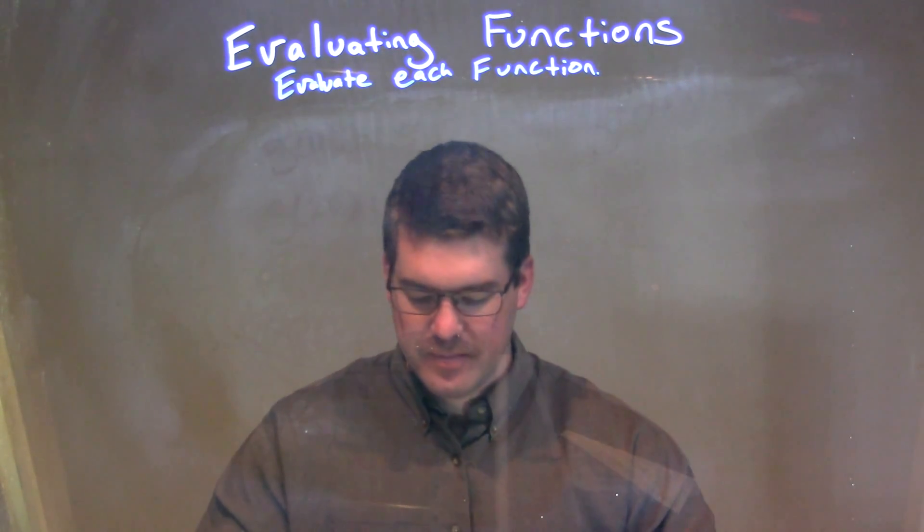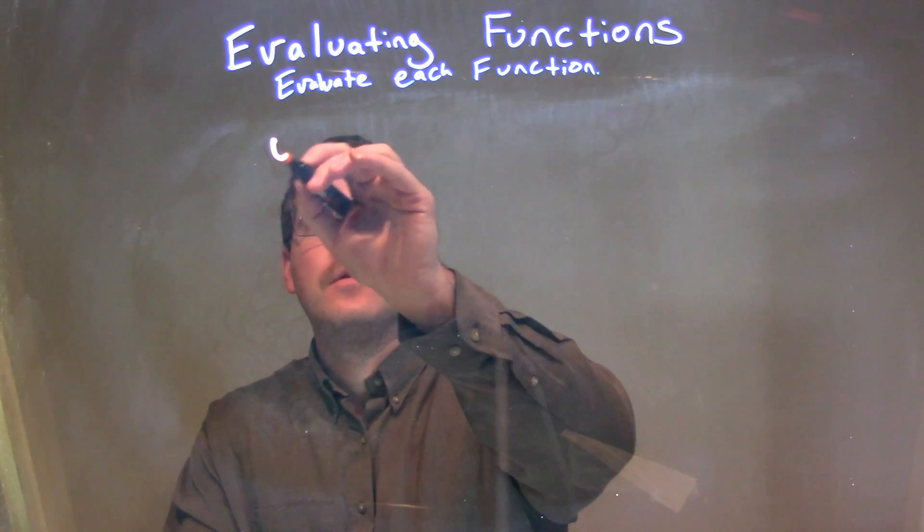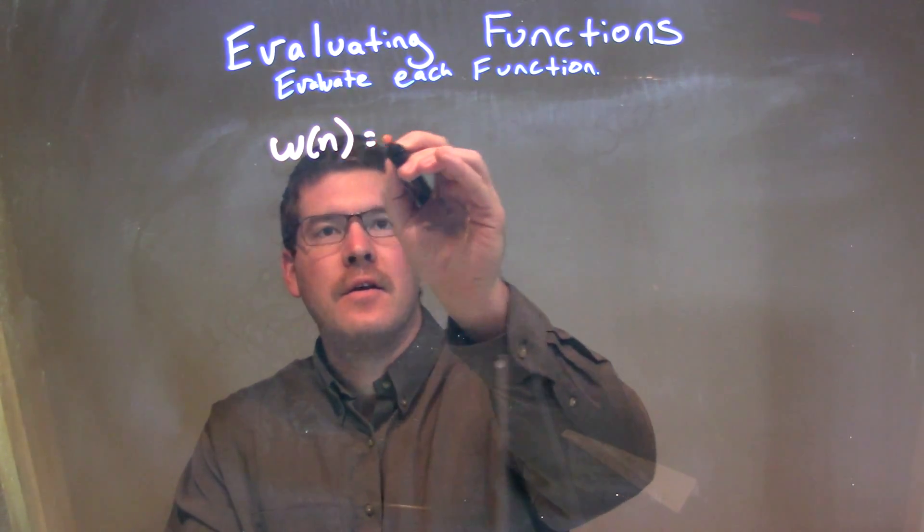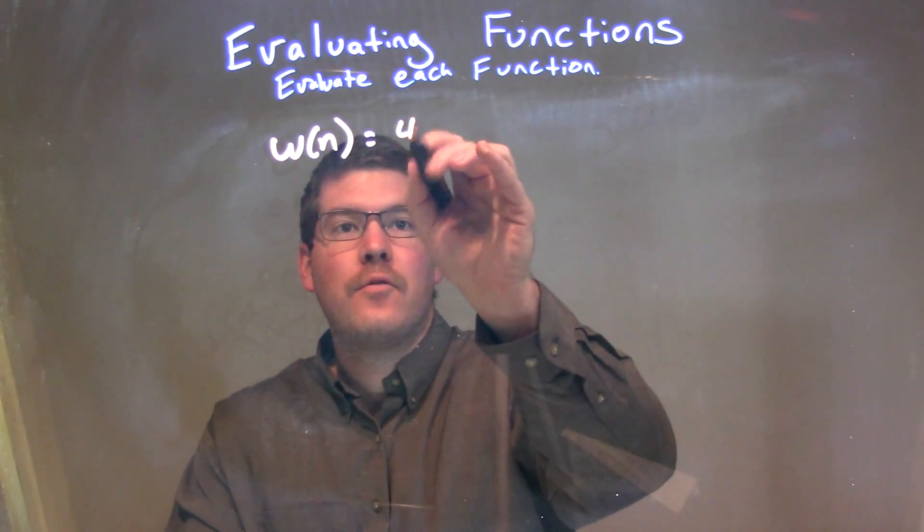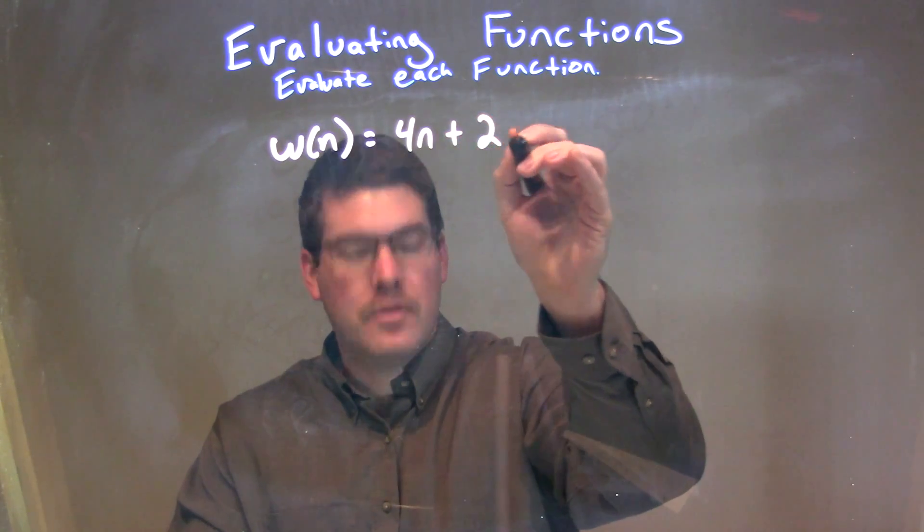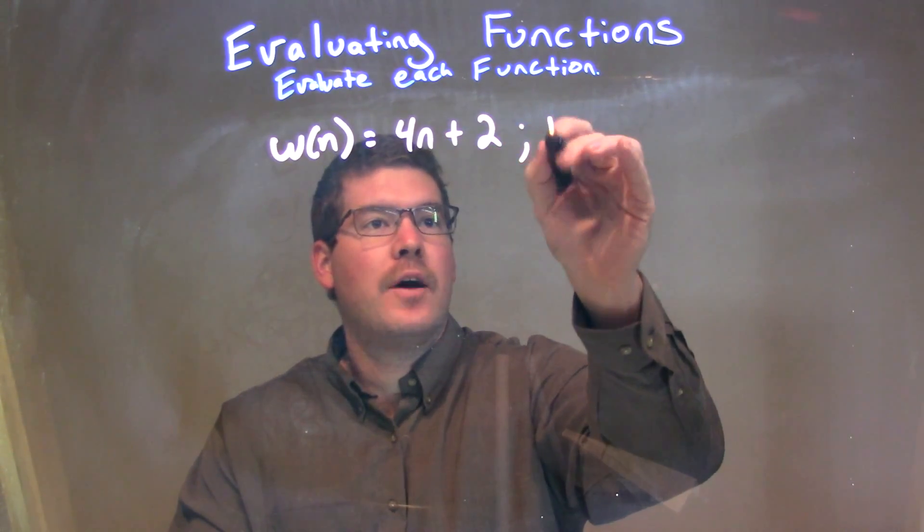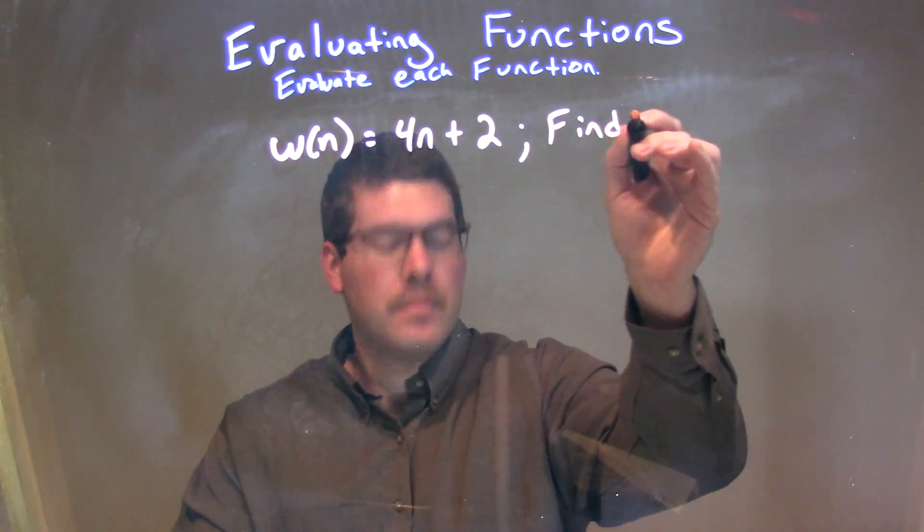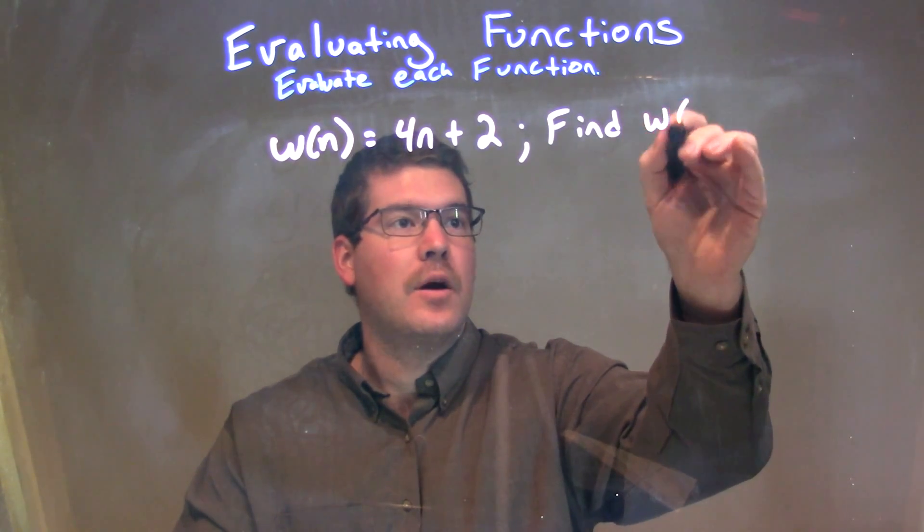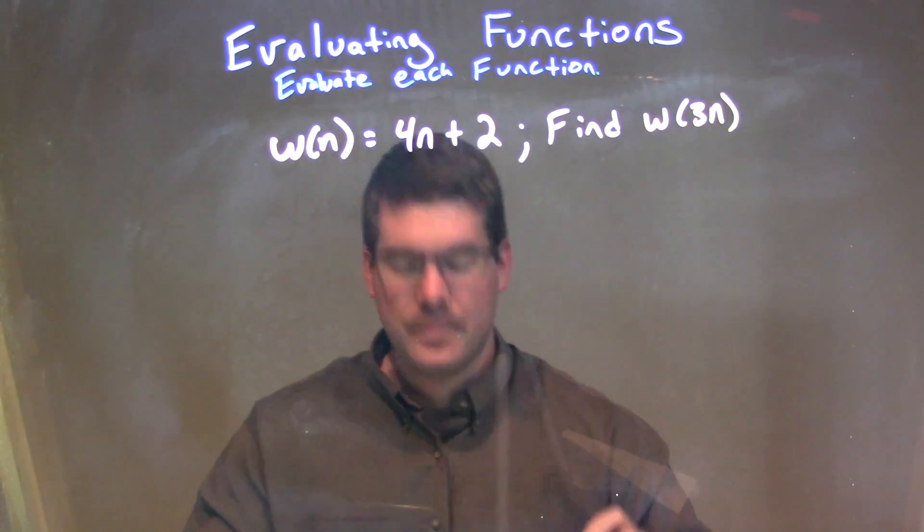So, if I was given this function, w(n) is equal to 4n plus 2, and we want to find w(3n). Okay.